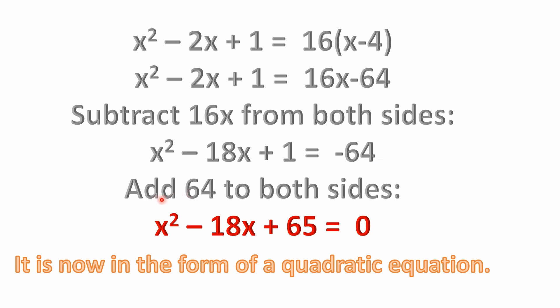Now from here, we could add 64 to both sides of the equation. Remember, whatever we do on one side of the equation, we have to do on the right to keep it equal. So we add 64 to both sides of the equation. That gets rid of this minus 64, leaves us with zero on the right side. And over here, if we add 64 to this plus 1, it gives us the plus 65. So now we have x squared minus 18x plus 65 equals zero.